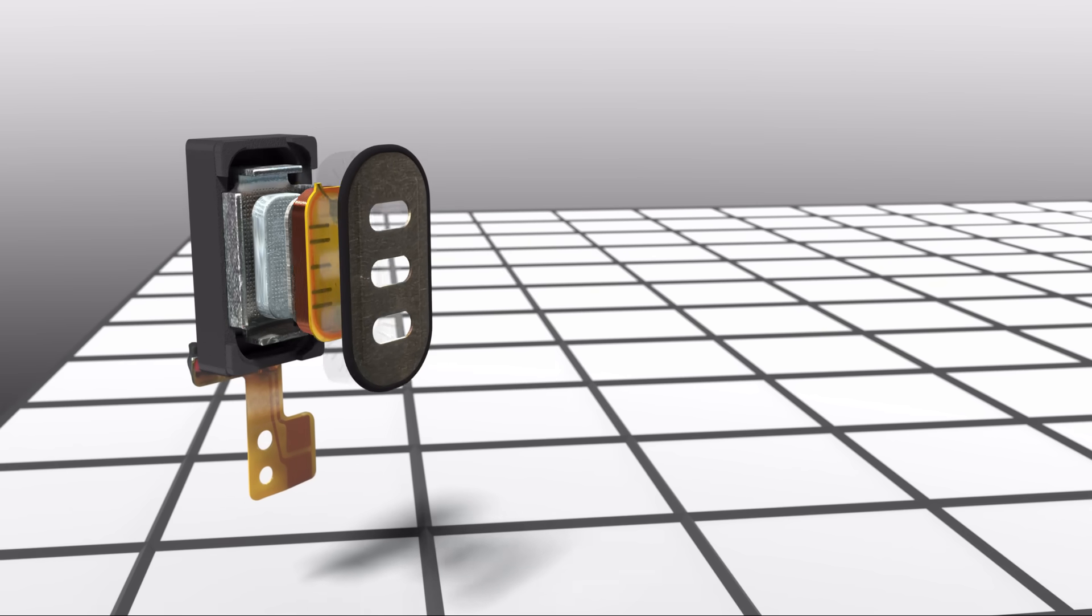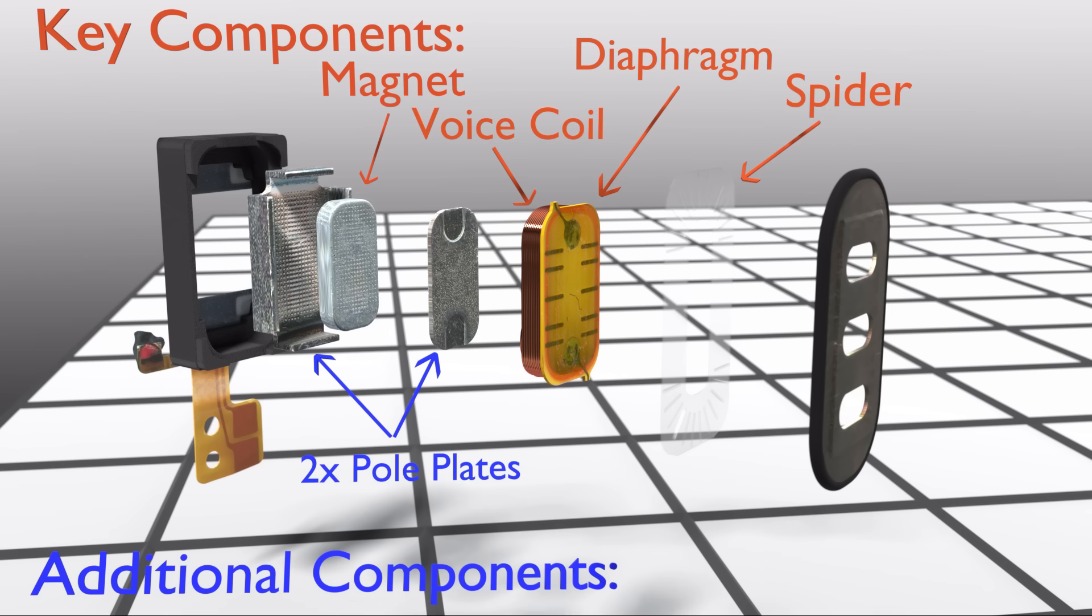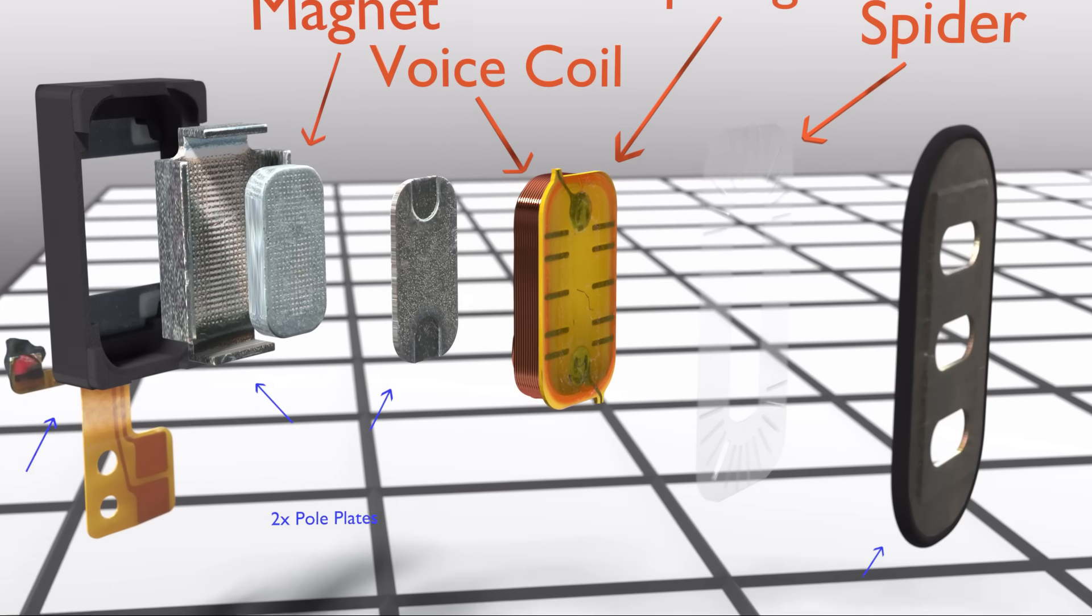In a smartphone speaker there are four key components: a diaphragm, a voice coil, a magnet, and a spider. For additional components, two pole plates, the plastic case, and the front cover provide uniformity for the magnetic field, structural support, and protection. Let's focus on the four key components and go over them in detail.